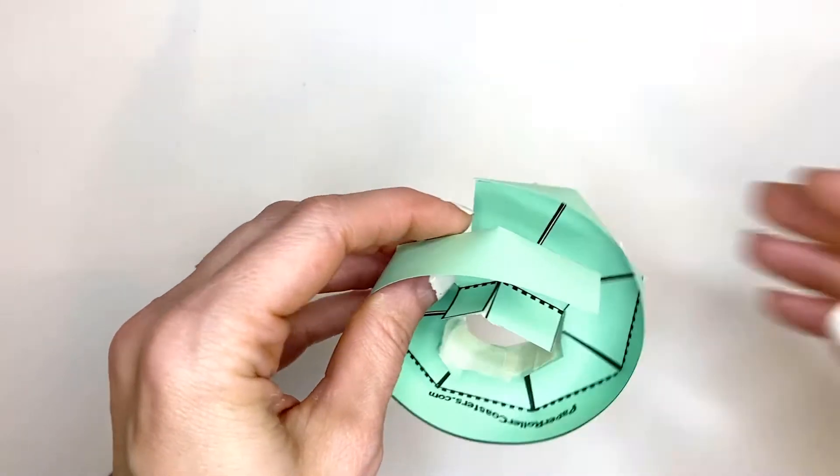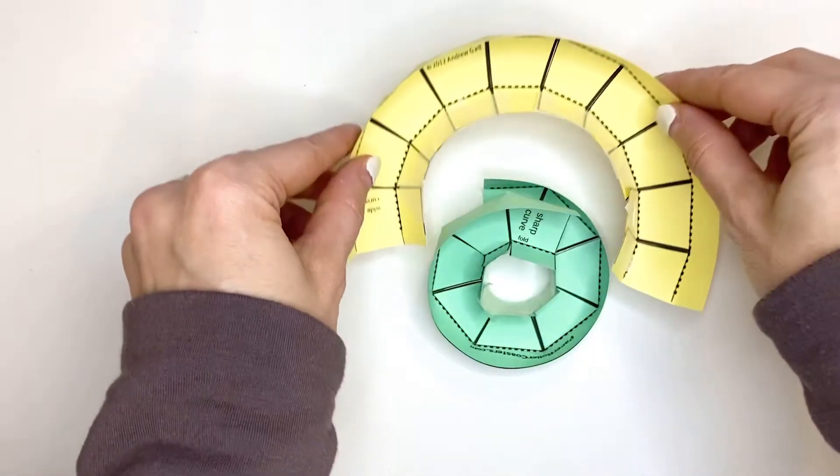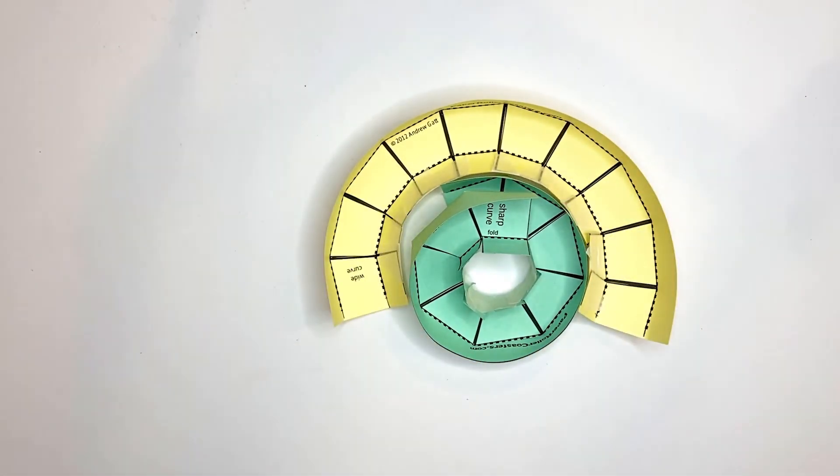This is what the wide curve or the bigger turn looks like. It can just fit right over this one.